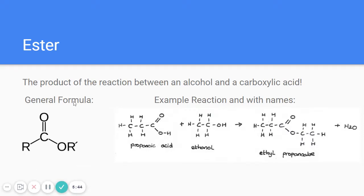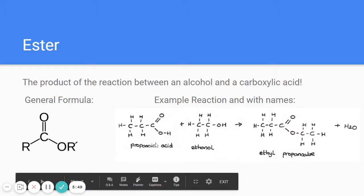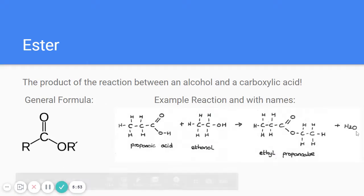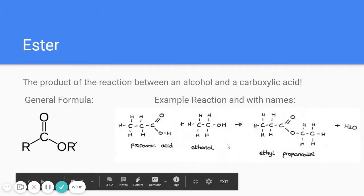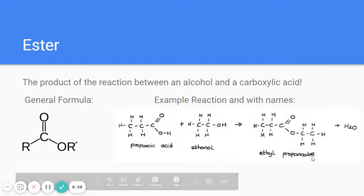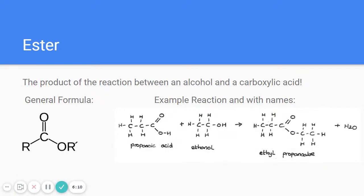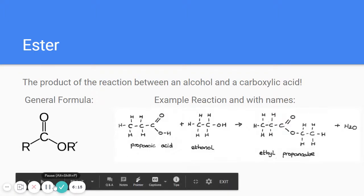As a side note, an ester is the product of a reaction between a carboxylic acid and an alcohol — you get an ester and water. That's a four-step process you should know. This is a good slide to keep for the reaction example. Again, esters end in '-ate', so if you're given a name ending in '-ate', you would identify it as an ester.